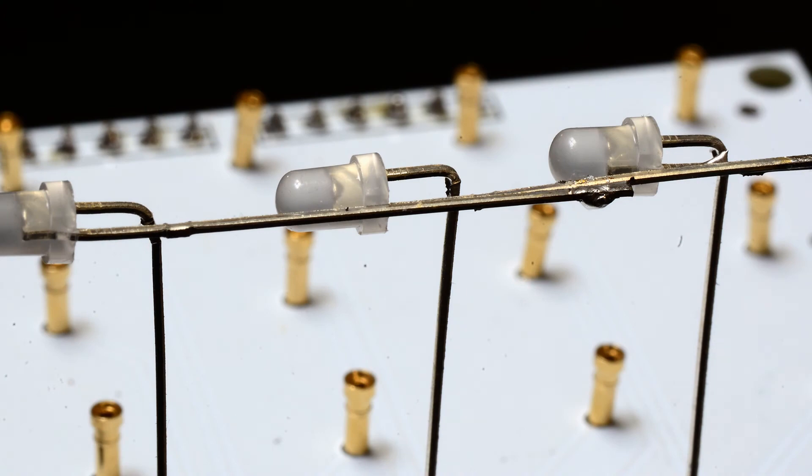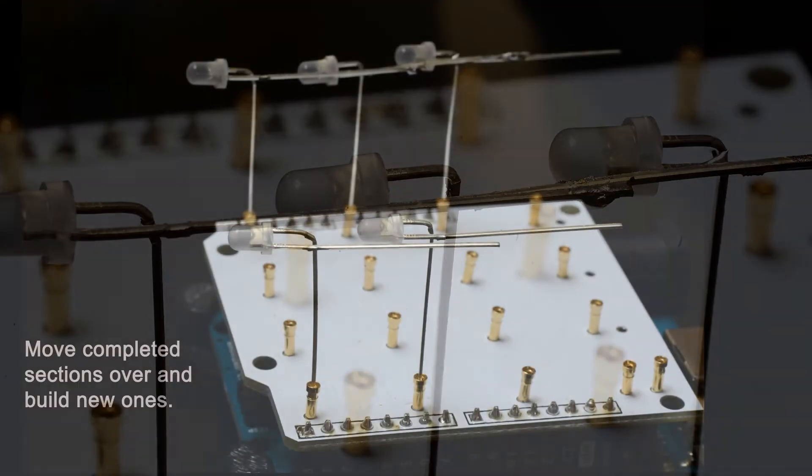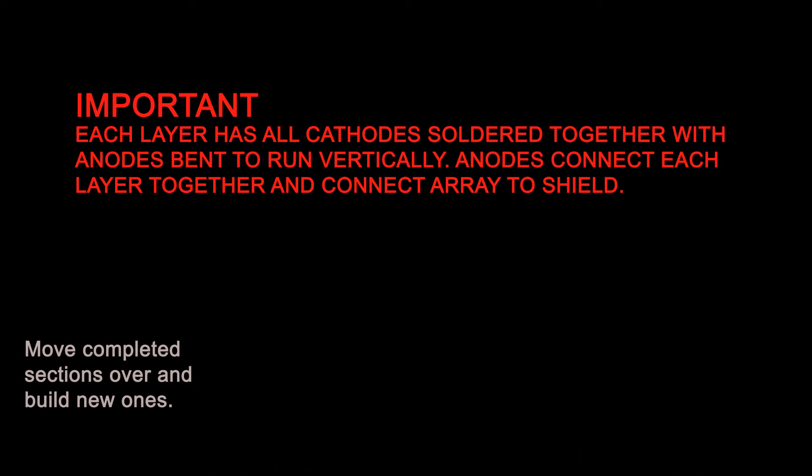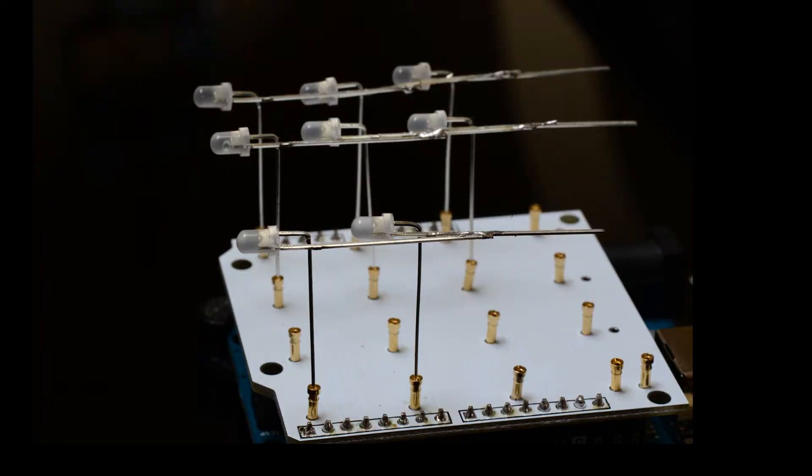Once you've completed three, I moved the triplet to the back row and assembled the next row. Remember, the cathodes and anodes of the LEDs should never touch on any layer or between layers. The concept is that all cathodes for each layer are connected and the anodes are attached between layers to create a column.